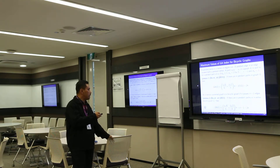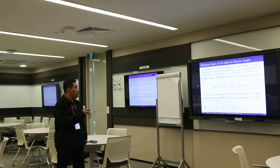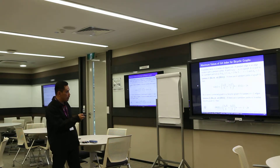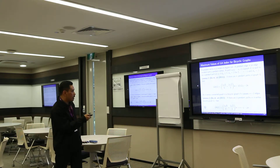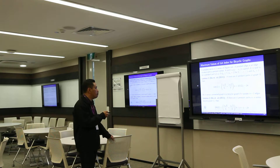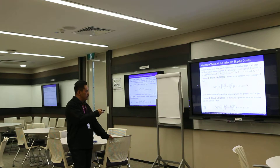What I am doing is finding the maximum values of the GA index of bicyclic graphs. We use the method of pendant paths. A pendant vertex is a vertex of degree one, and a pendant edge is an edge incident with a pendant vertex. The path u1, u2, …, ur in graph G is said to be a pendant path at u1 if deg(u1) ≥ 3, deg(ui) = 2 for i from 2 to r−1, and deg(ur) = 1.